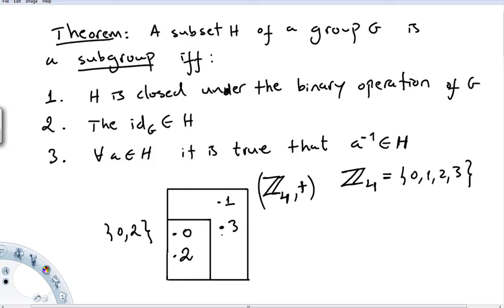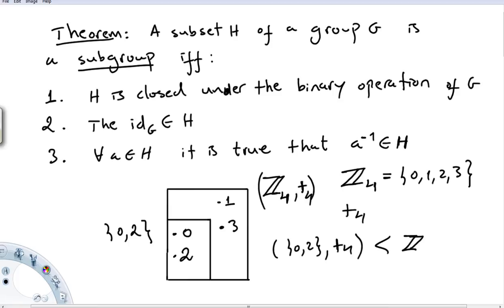We already saw this example in one of the previous videos. Here we have the group Z4 under addition — that is, addition modulo 4. And here we have another set {0, 2}. Let's see if this set under addition modulo 4 is a subgroup of Z4.